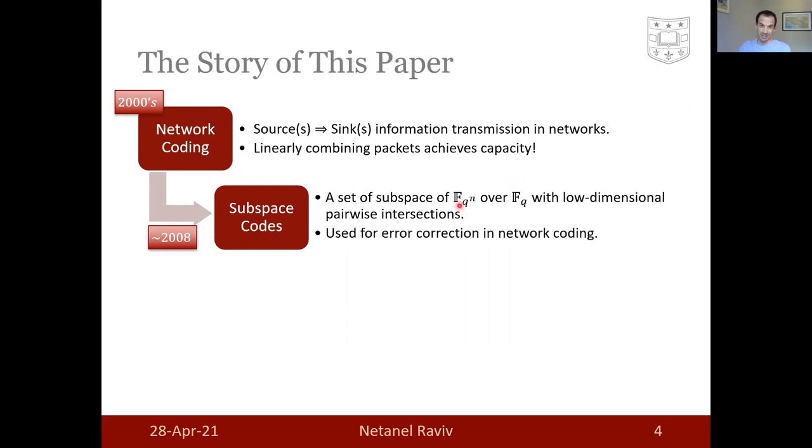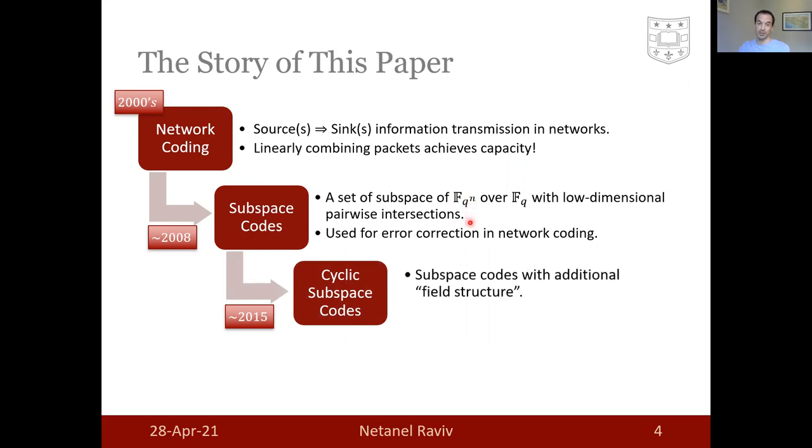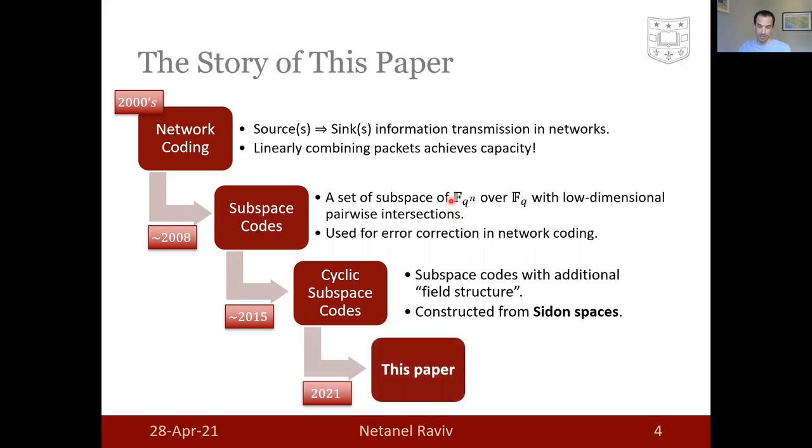They are used for error correction in network coding. This observation ignited an influx of research about subspace codes, which included cyclic subspace codes. These are subspace codes with an additional field structure, meaning that their construction exploits the structure of the extension field, and not just its structure as a vector space. And that's where me and my collaborators show up. They can be constructed from the so-called Sidon space, which we haven't seen the definition of yet. This brings us to this paper, where we show that the same Sidon spaces that were used in this research are also applicable to construct public key cryptosystems.